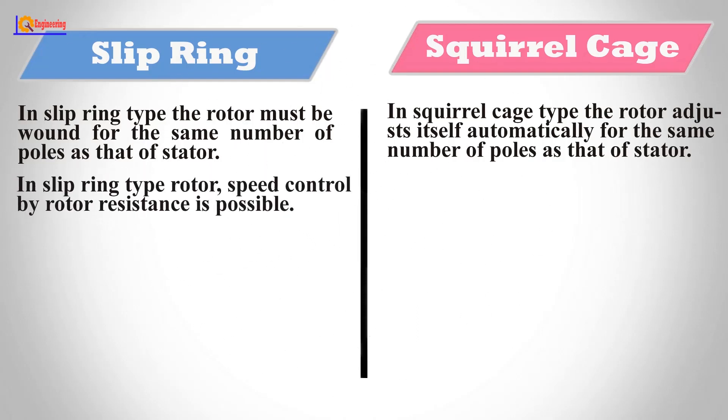In slip ring type rotor, speed control by rotor resistance is possible. But in squirrel cage type rotor, it is not possible to speed control.